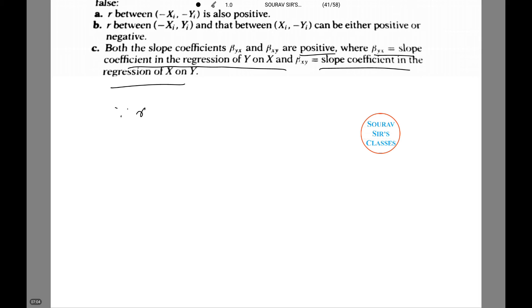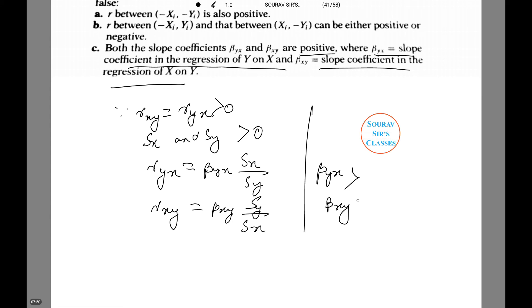Now since rxy equals ryx which is greater than 0, and Sx and Sy, the standard deviations of x and y respectively are both also positive. Therefore ryx equals βyx·Sx/Sy and rxy equals βxy. Then βyx and βxy both are positive. Hence the number C statement is true.